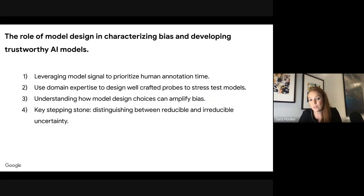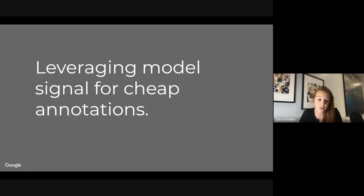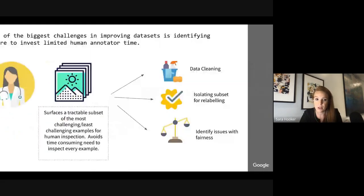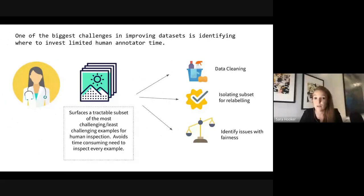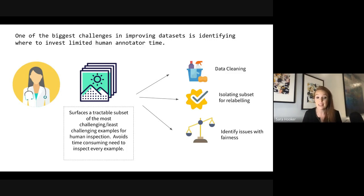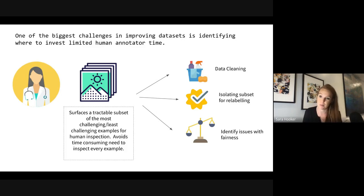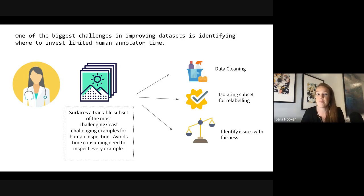I'm going to talk about four ideas, all relating to how we use model design to characterize bias and develop trustworthy AI. The first is how to leverage model signal for cheap annotations. The biggest challenge in improving datasets is identifying where to invest limited human annotation time — compounded by the growth in dataset size. The challenge is how to surface a tractable subset of the most and least challenging examples for human inspection, directing limited annotation time, helping with data cleaning, and also helping with auditing where we may not yet know what protected attribute to look for.